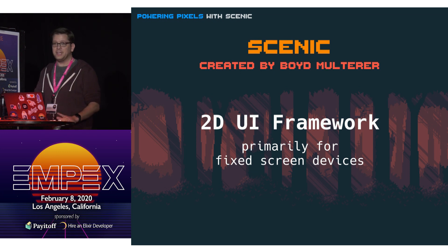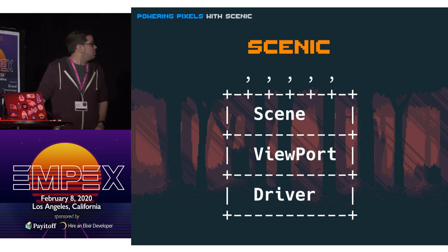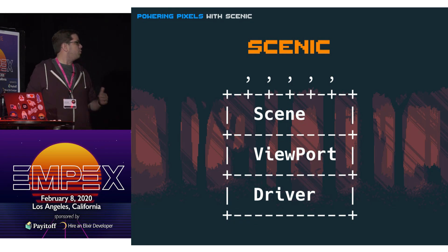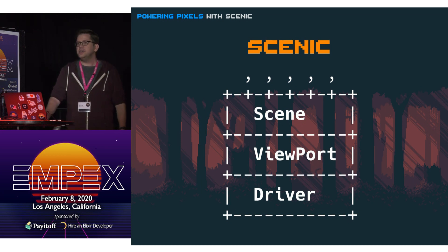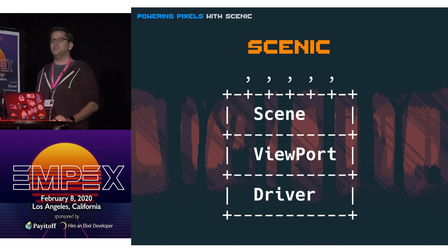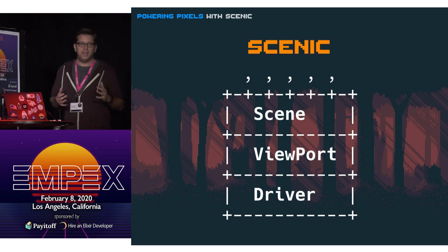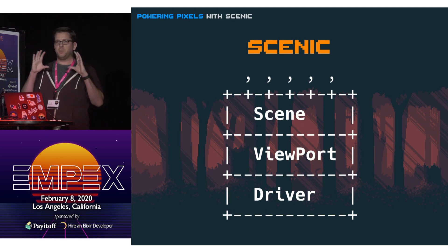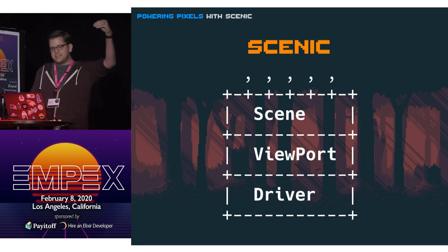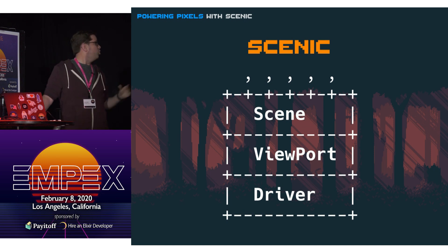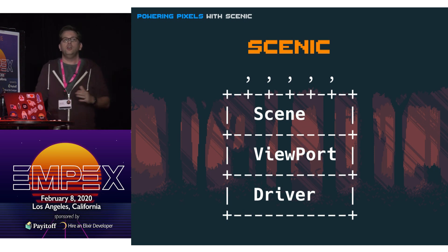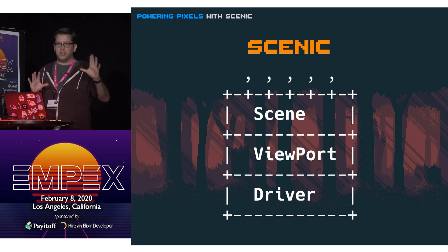I thought it would be cool to try and make a game with it. I've never made a game before, I have no idea what I'm doing, so I jumped in and tried to see what I could do. Scenic's documentation refers to it as having a three-layer cake architecture. Your top layer is the scene layer, and this is where you do most of your interacting — kind of like building an HTML page, building all the layout of what's going to display on screen. That gets put into what's called a graph, which is like your DOM, that gets sent down through the viewport, and then the viewport translates it down to the driver, which knows the hardware to actually display it on screen.